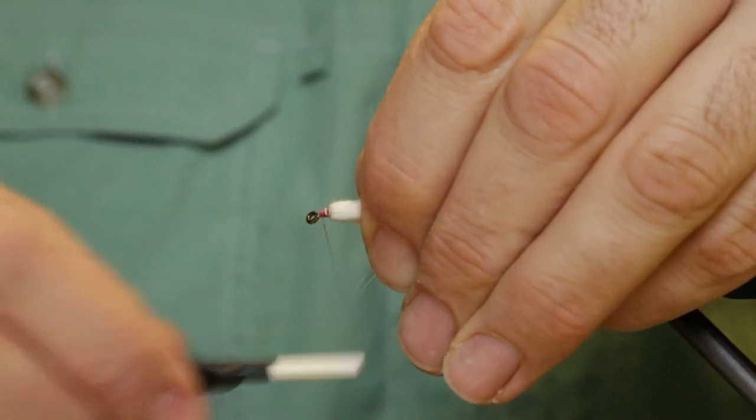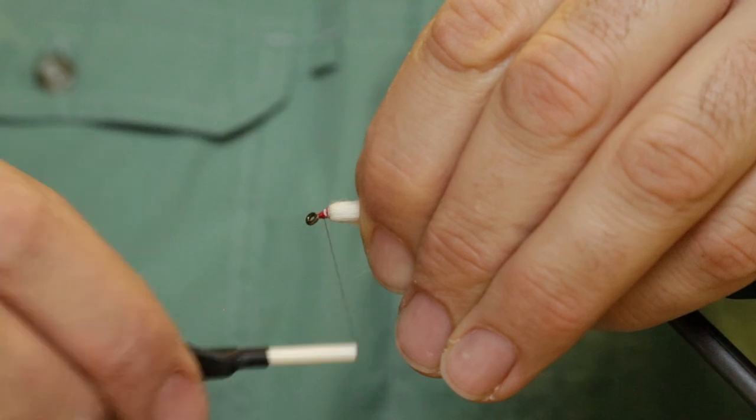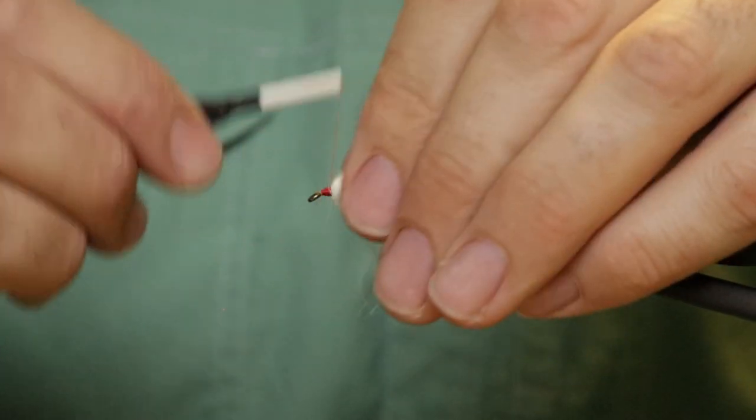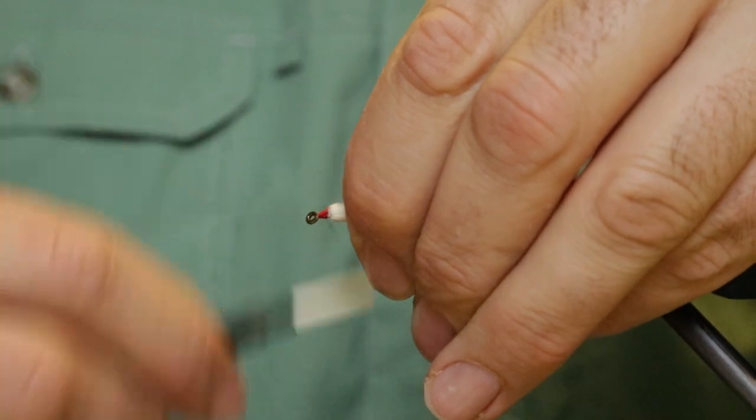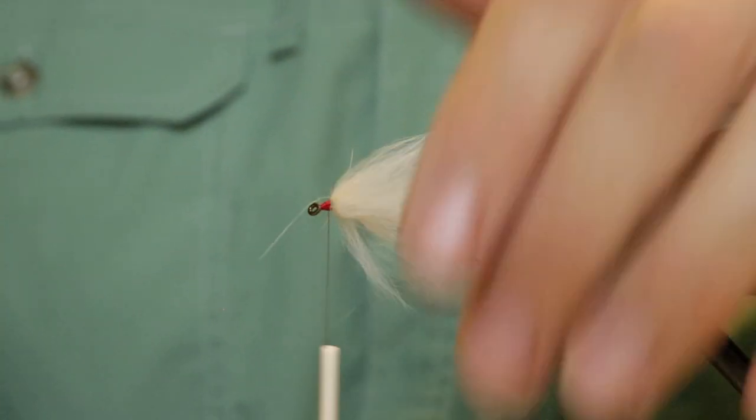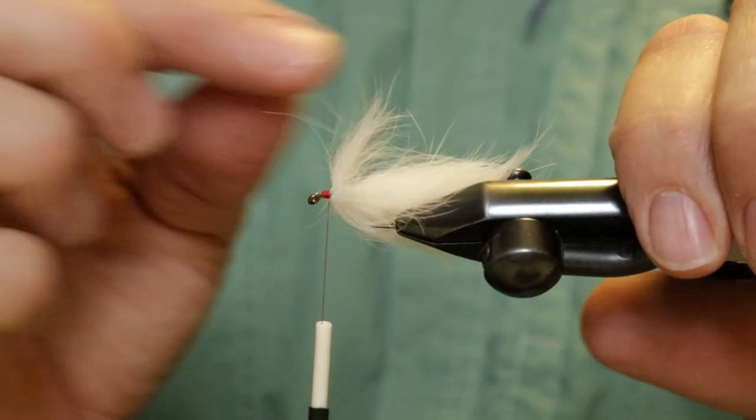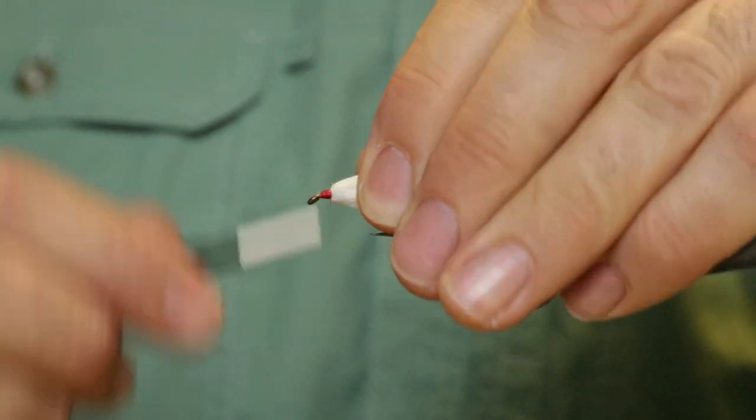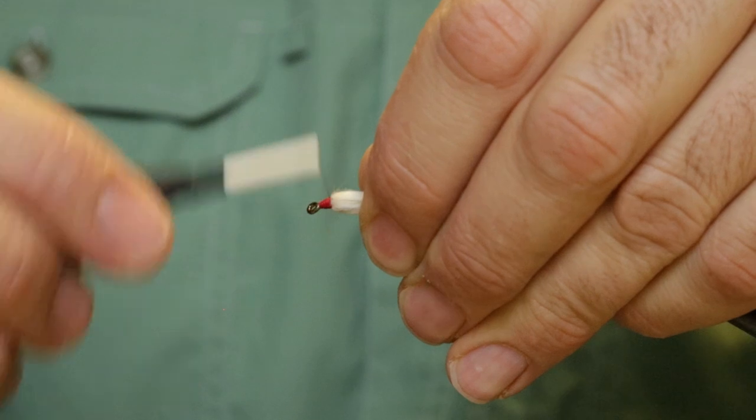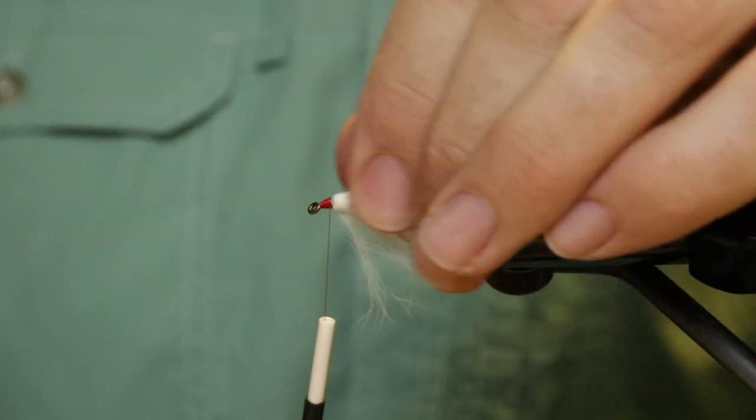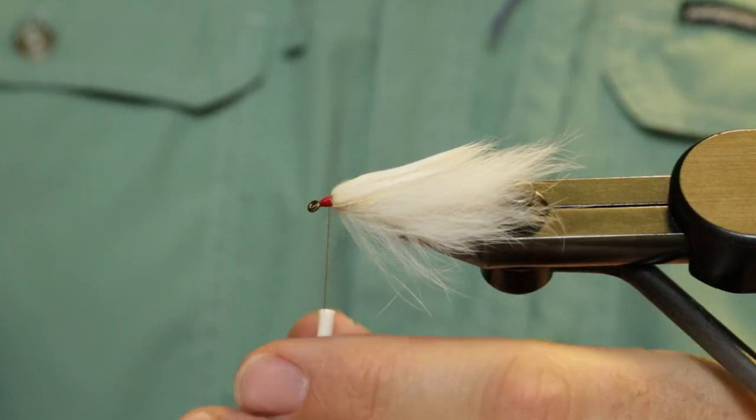And we'll go ahead and form our head. And like I said, this is good in different colors like this cream, your tans, your gingers. You can also make like a ginger tail and a cream body or a cream tail and a ginger body. But really want to stick more to that dead flesh kind of coloration.